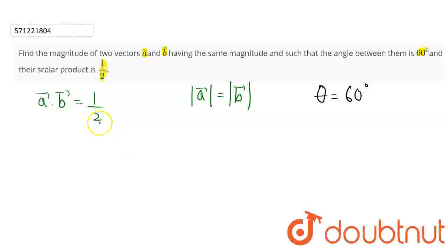So here we have to find the magnitude of these two vectors. Now as you know that dot product is given by A vector dot B vector equals to mod of A vector into mod of B vector, that is being multiplied by cos theta.